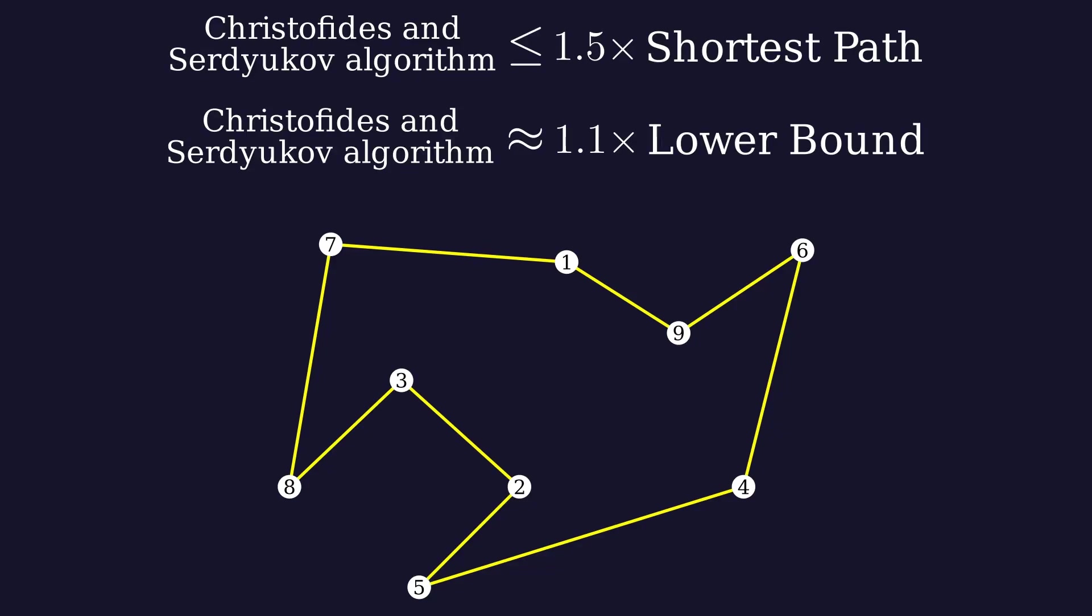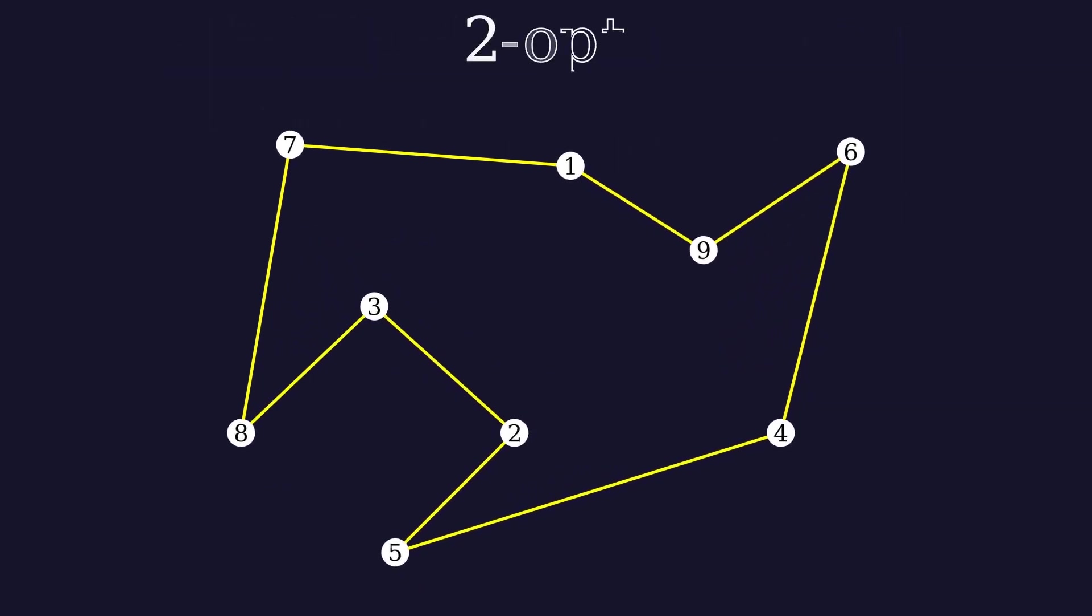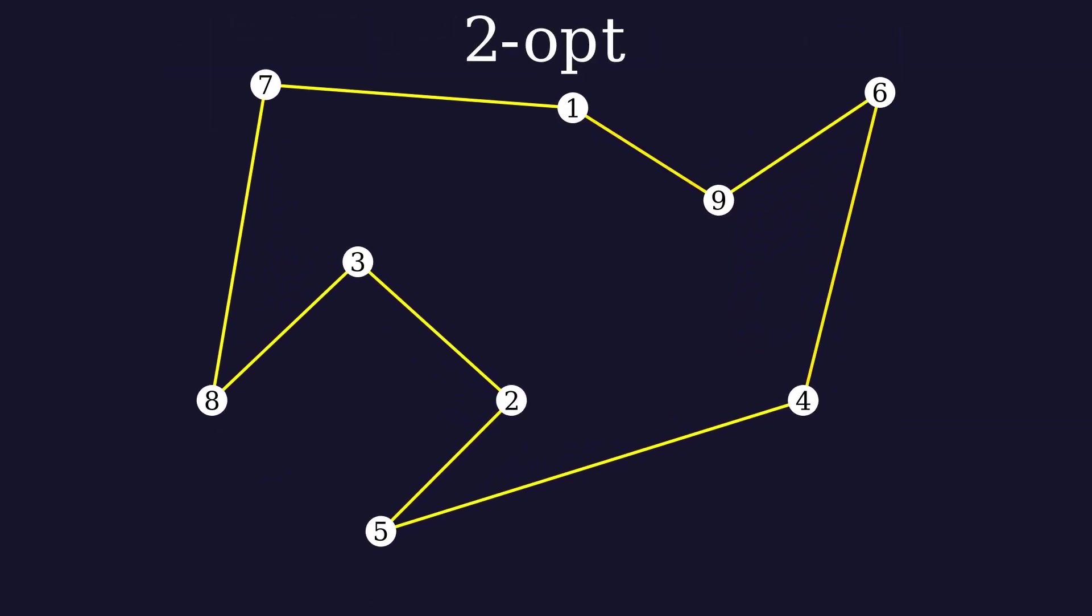However, we can take this even further to improve the path. One approach is called 2-opt. In 2-opt, we remove two edges from the path and replace them with two new edges that reconnect the path in a different way. We then check if this change has improved our path. There's also the option of 3-opt, where we take out three edges and replace them with three different edges.